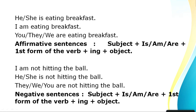Don't get confused with terms like affirmative and negative — they're mentioned because you find them in your books for reference. Some examples: 'She is eating,' 'I am eating,' 'They are eating' — in all these the action is already happening, so they are affirmative sentences in present continuous tense.